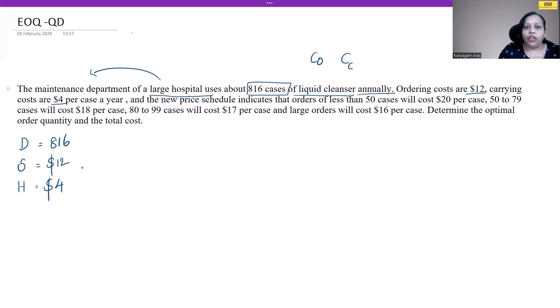Alongside, they have given us a new price schedule. This indicates if we go for higher order quantity, we're going to get a discount. This is when EOQ with quantity discount model comes into the picture. When the order is less than 50 cases, it costs $20 per case. Between 50 to 79, it costs $18 per case.